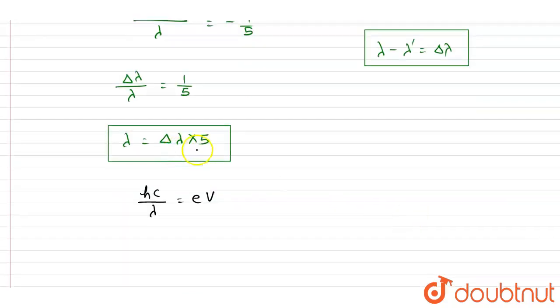So I will write down hc by lambda is equals to eV. Lambda value is 5 delta lambda, so I will write down, put the value of lambda here.